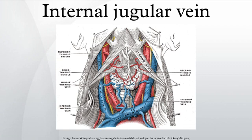Above, it lies upon the rectus capitis lateralis, behind the internal carotid artery and the nerves passing through the jugular foramen. Lower down, the vein and artery lie upon the same plane, the glossopharyngeal and hypoglossal nerves passing forward between them. The vagus descends between and behind the vein and the artery in the same sheath, and the accessory runs obliquely backward, superficial or deep to the vein.